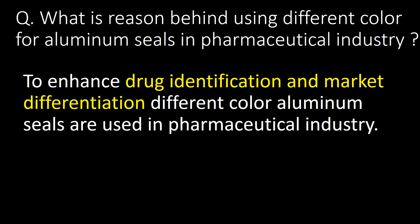What is the reason behind using different colors for aluminum seals in the pharmaceutical industry? To enhance drug identification and market differentiation, different color aluminum seals are used in the pharmaceutical industry.